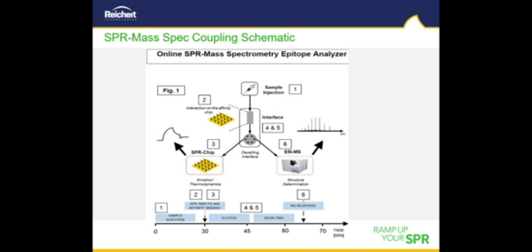After sample injection, the analyte is captured on the affinity chip, followed by the SPR chip for kinetic analysis of the affinity interaction. After sample processing through the desalting interface, structural analysis is performed by ESI (electrospray ionization) mass spectrometry. Total experiment time is about 70 minutes.